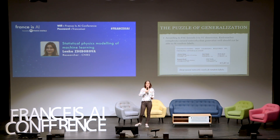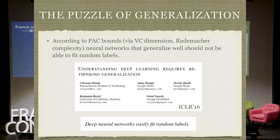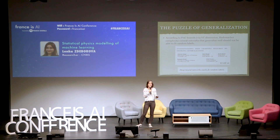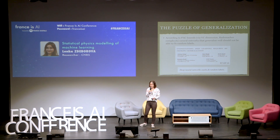Another question is about the generalization error. The previous speaker was talking about generalization bounds such as those based on the VC dimension and the Rademacher complexity. In one sentence, those can be summarized as: a network that can fit random labels should not be able to generalize. But in this now very well-known paper from a couple of years ago by Recht and collaborators, they actually showed experimentally that current deep nets do easily fit random labels, yet they do generalize as well. So this theory doesn't explain that.